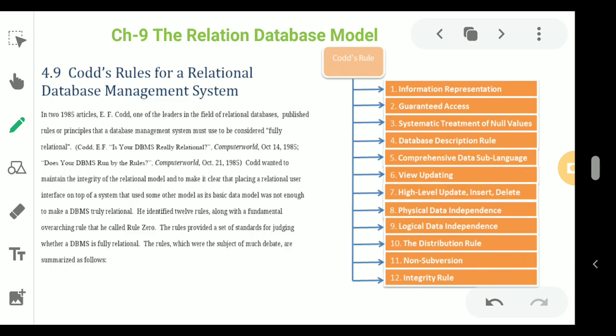Rule 3 is the Systematic Treatment of Null Values. Fields should be allowed to remain empty, which involves supporting a null value. Null means a value is present but unknown — it is distinct from an empty string or zero. Empty means nothing is there, and zero means a value of zero is there. If you want to leave a field blank, you need to put a null value there.